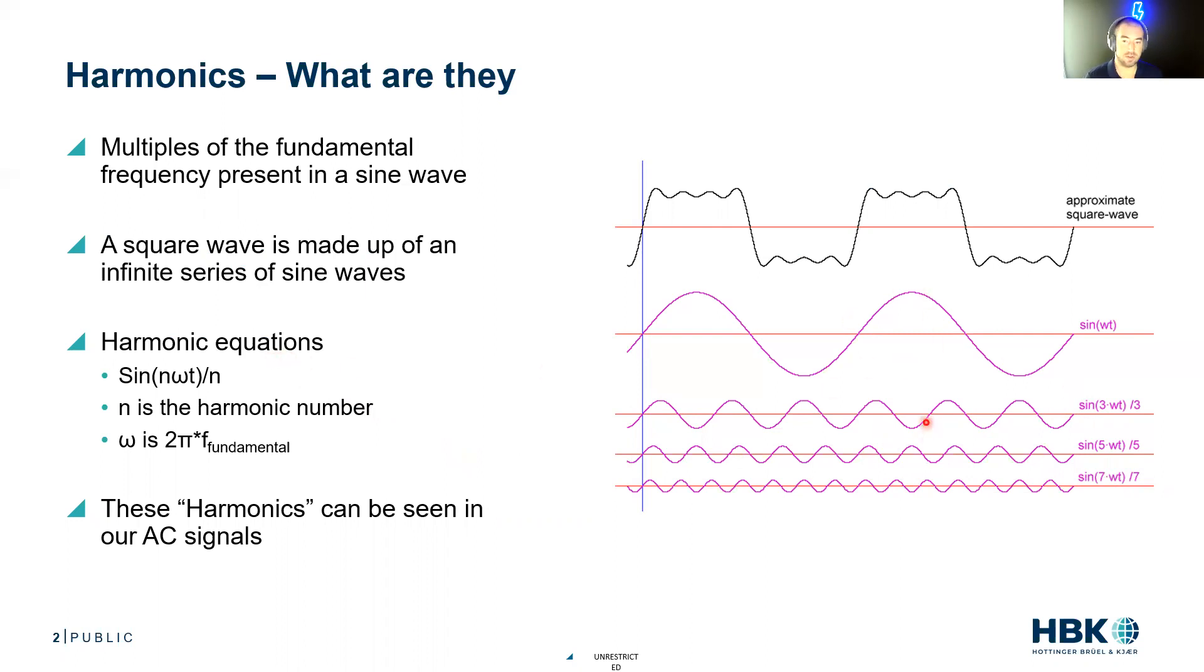This doesn't always rain perfectly true in the motor, but it's a really good starting spot. Harmonic equations are sin(nωt)/n, n being the harmonic number, where ωt is 2π times the fundamental frequency. These harmonics can be seen in our AC signals.